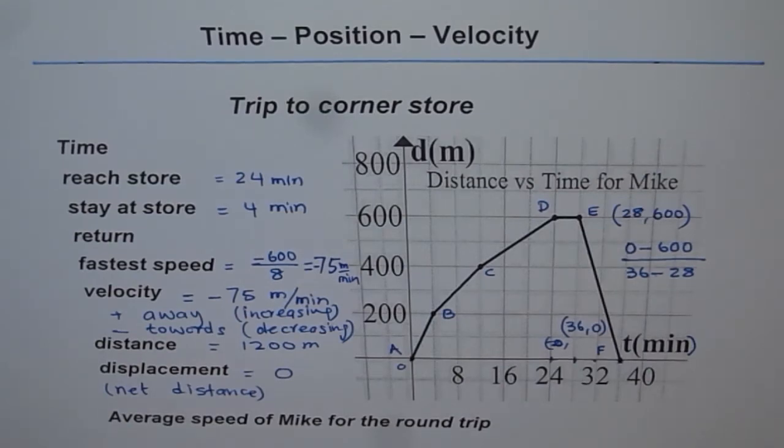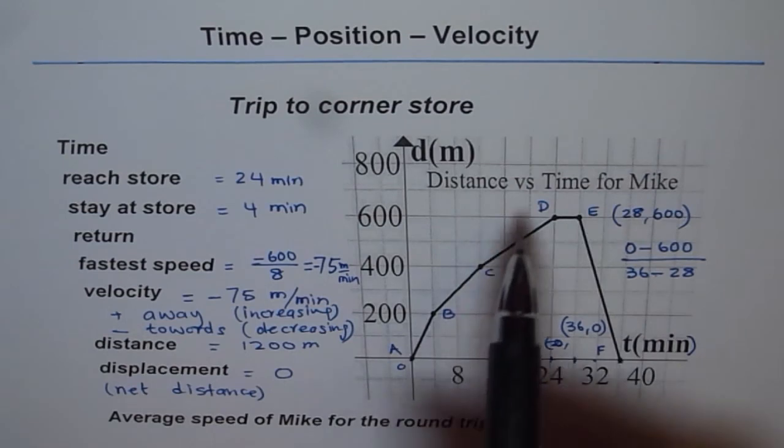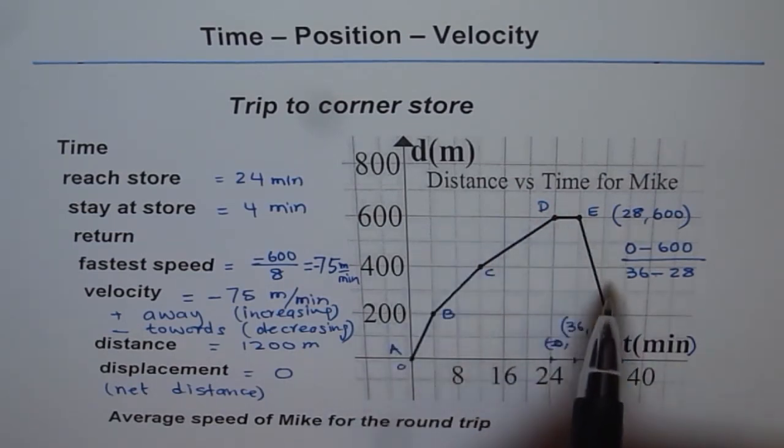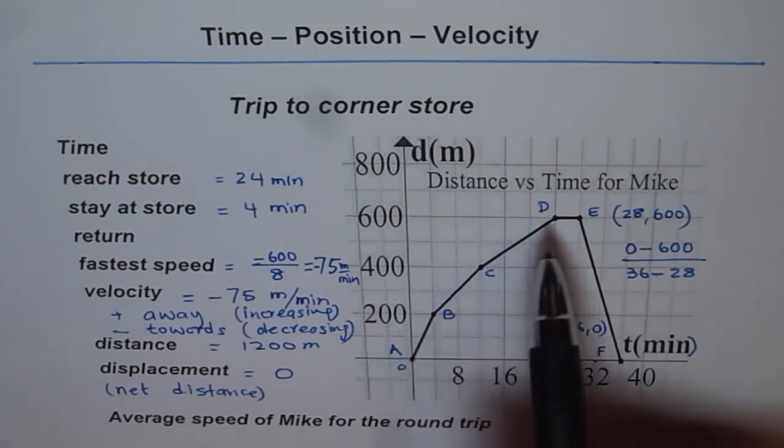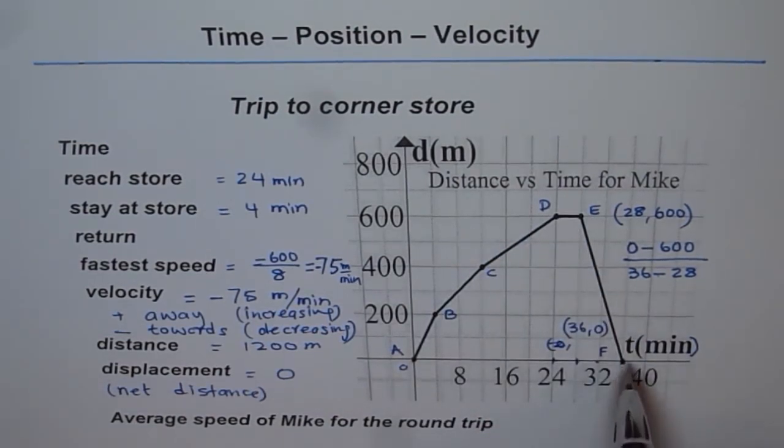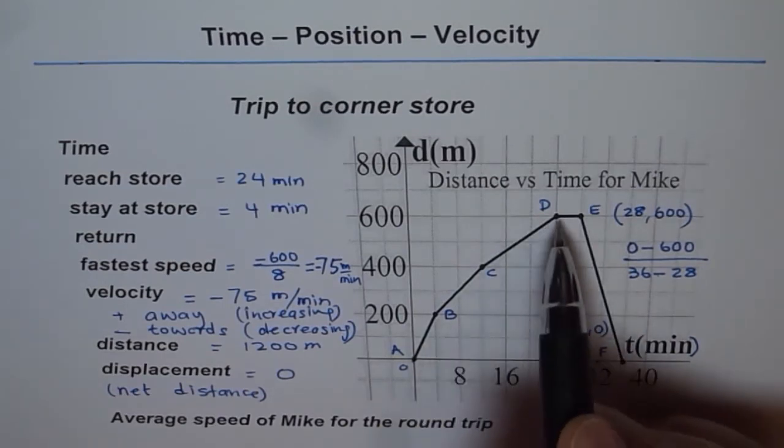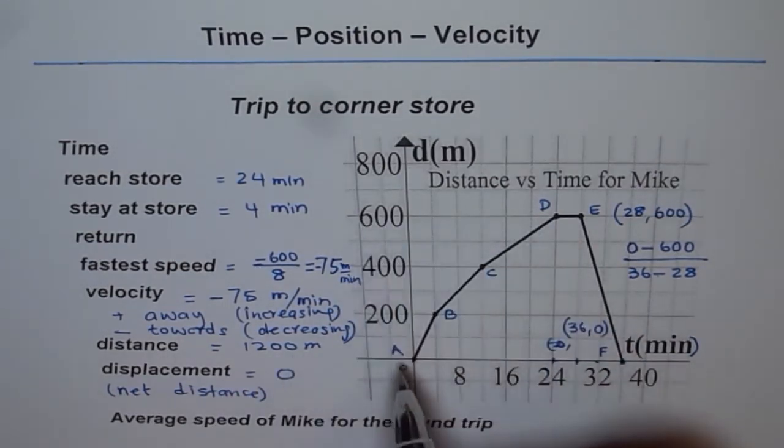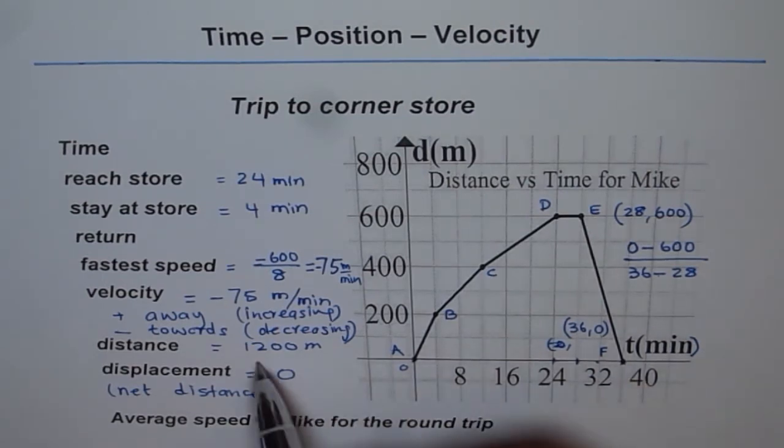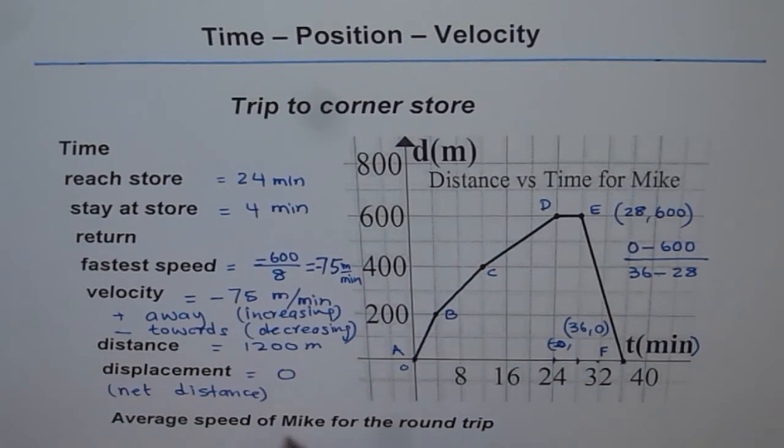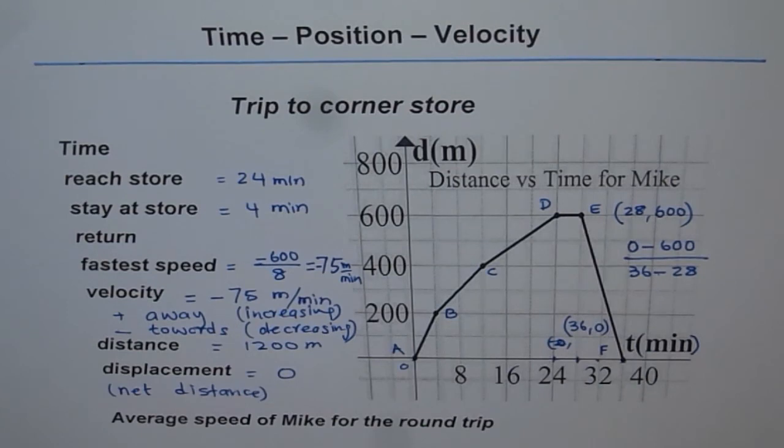Now what I want you to calculate is average speed of Mike for the round trip. Can you calculate the average speed for the whole trip? Average speed will be total distance traveled divided by time. Total distance will be 1200, 600 going, 600 coming back, which is 1200 meters divided by total time taken, which is 36. When you divide 1200 by 36, you get average speed for the round trip.